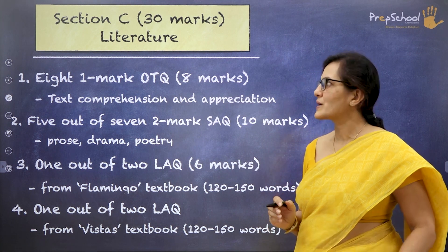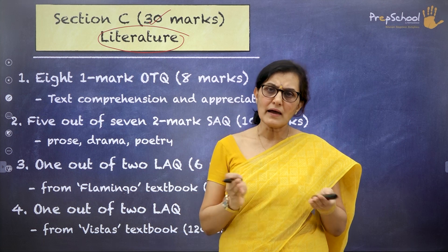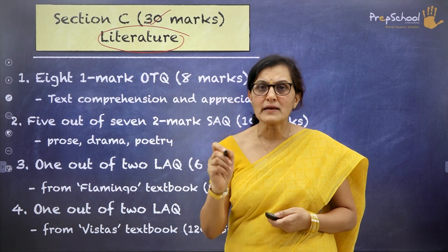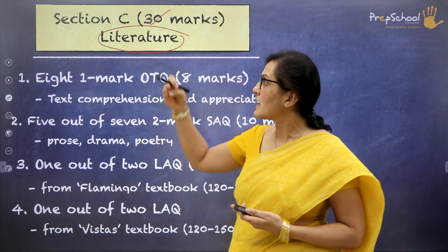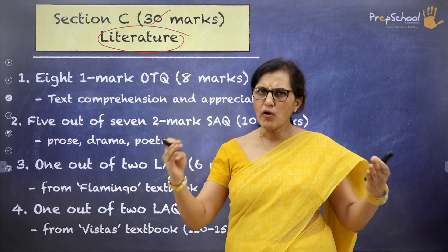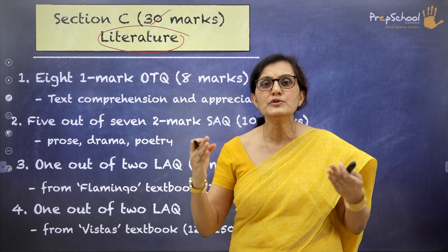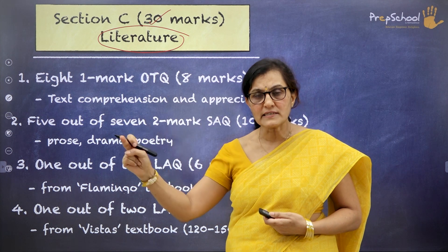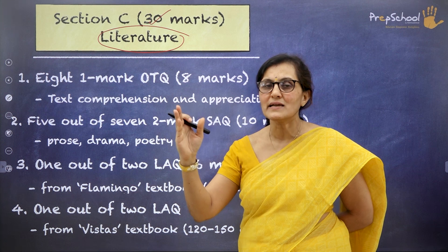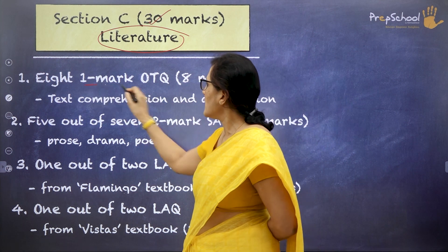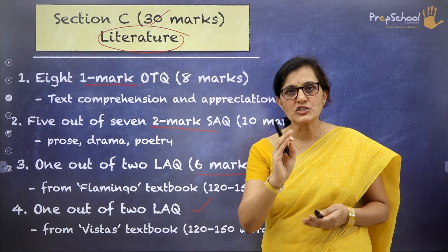Moving on to Section C — it's everything to do with literature and it's for 30 marks. This is where both your textbooks, Vistas and Flamingo, will come in handy. You need to thoroughly read all the chapters so that it is simpler to attempt this section. You will be answering short answers, long answers, or very long answers. How to answer, opine, paraphrase, and comment — that is exactly what I will teach you in further sessions. Section C questions could be 1 mark, 2 marks, or 6 marks.